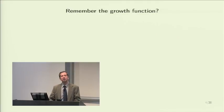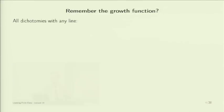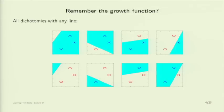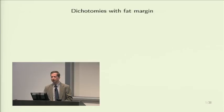Does anybody remember the growth function? We take the dichotomies of a line on points in the plane — say three points. On three points, you can get all possible dichotomies by a line. By varying where the line is, you can get all possible 2^3 equals eight dichotomies. The growth function being big is bad news for generalization — that was our take-home lesson. Now let's see if this is affected by the margin. We are now taking dichotomies requiring not only a separating line but also that the dichotomies have a fat margin.